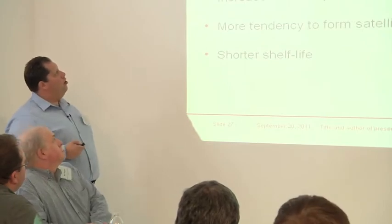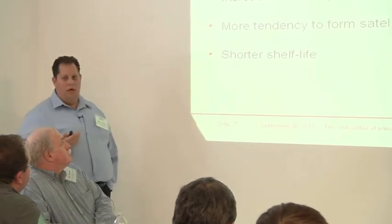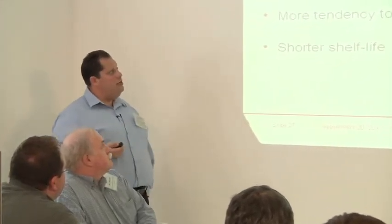What do smaller particles give us? They give us better print definition. They're definitely what you want to use for smaller apertures. It does increase the initial tack force. It does also increase your viscosity, which is going to change your print setup. There is more of a tendency to form satellite balls and also a shorter shelf life of the paste itself. Because they're smaller spheres, the surface area to volume ratio is higher - a higher propensity to oxidize - so you may get more satellite spheres or solder balling because of that.